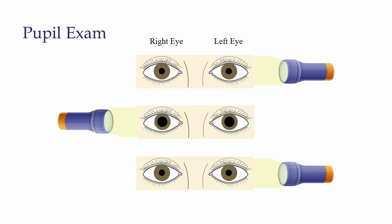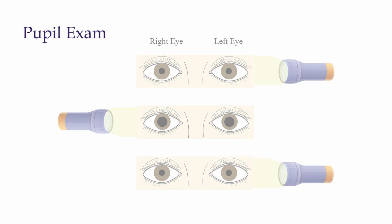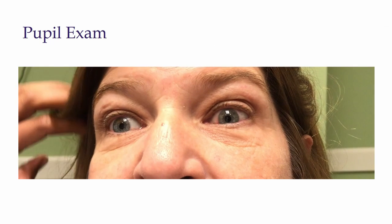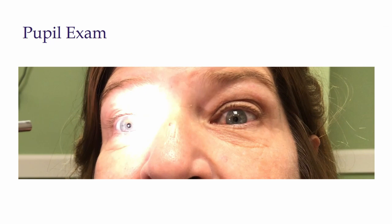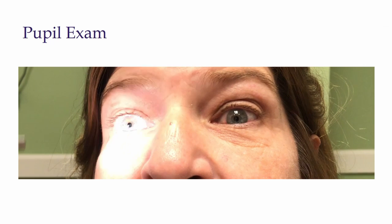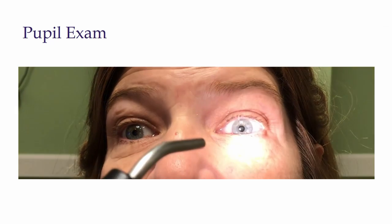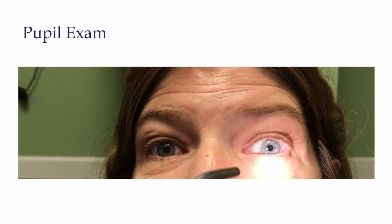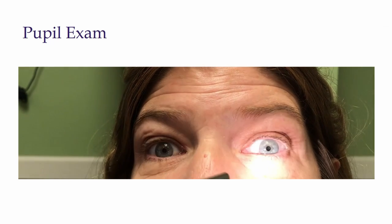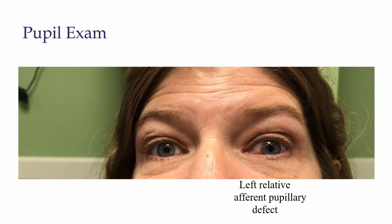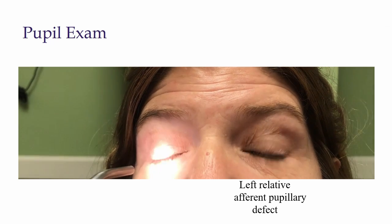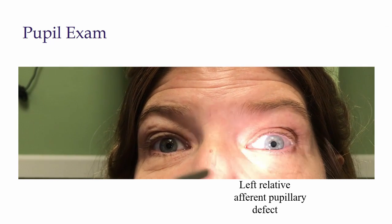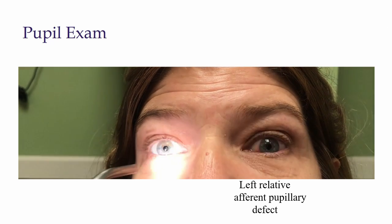The next part of this test is a swinging flashlight test. This helps you identify the presence of a relative afferent pupillary defect, or APD. Start by shining the light into the right pupil and observe how it constricts. Maintain focus on the right pupil and move the light to the left pupil, then bring the light back to the right pupil — the pupil should maintain its constriction. If the pupil starts to dilate, there is an APD. This can be caused by conditions such as optic neuritis, inflammation of the optic nerve, or asymmetric optic nerve damage. In any patient that presents with decreased vision and pain with eye movement, check for an APD.